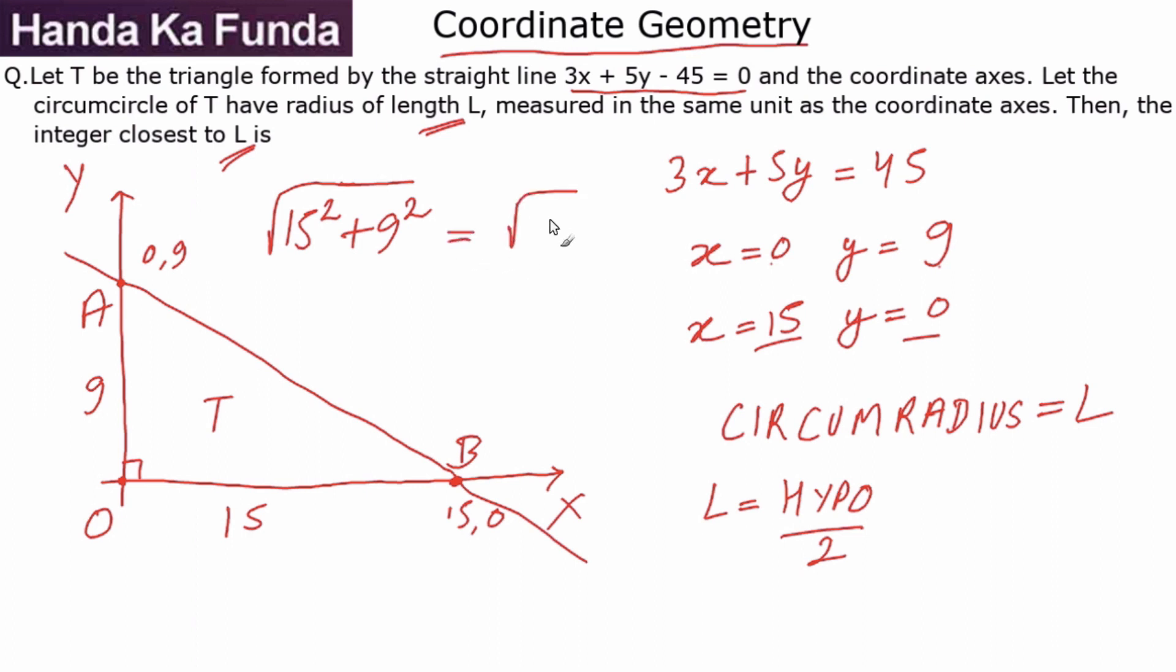15 square is 225, 9 square is 81, that means 225 plus 81 will come out as root of 306. Now this is not a perfect square, but what I do know is that 17 square is 289 and 18 square is 324, which means this particular value, square root of 306 or the hypotenuse that we were looking for, will be more than 17 and less than 18.